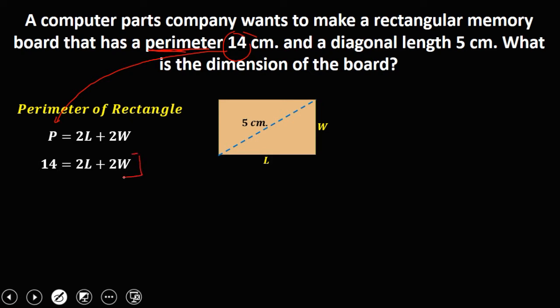Then reduce this equation divisible by 2. So 14 divided by 2 is 7. Then divide by 2, that's L. Divide by 2, that's W. So therefore, this is your first equation.